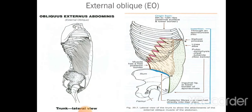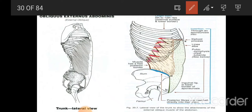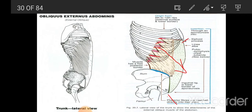The external oblique muscle has its origin from the outer surfaces of the lower eight ribs. The insertion is on the outer lip of the iliac crest; the ventral segment of the outer lip of the iliac crest also gives insertion. It is also inserted in the form of the linea alba, extending from the xiphoid process up to the pubic symphysis. The fibers of the external oblique run downwards, forwards, and medially, which helps identify this muscle in the cadaver.